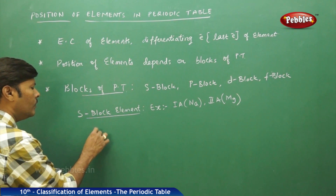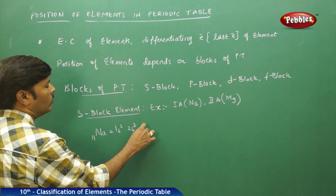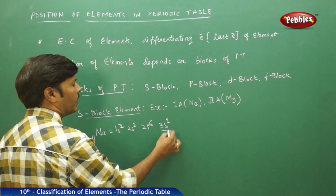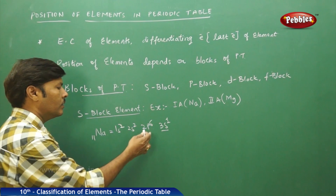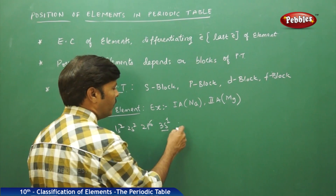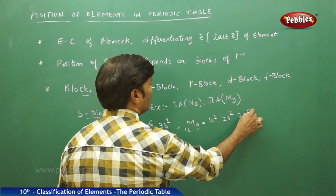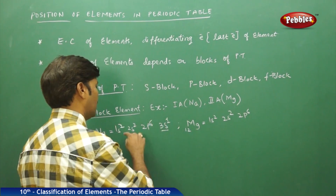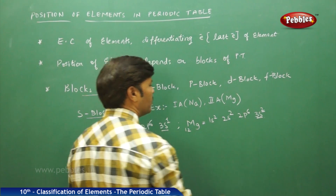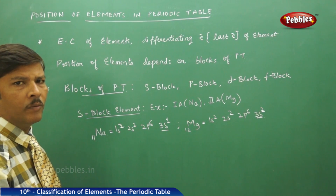Writing the electronic configuration of sodium (atomic number 11) in expanded form: 1s², 2s², 2p⁶, 3s¹. The 11th electron enters the 3s orbital. For magnesium (atomic number 12): 1s², 2s², 2p⁶, 3s². The last two electrons of magnesium are filled in the 3s orbital. Hence, both sodium and magnesium belong to s-block elements.